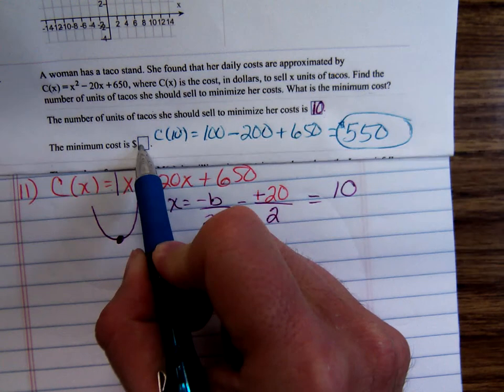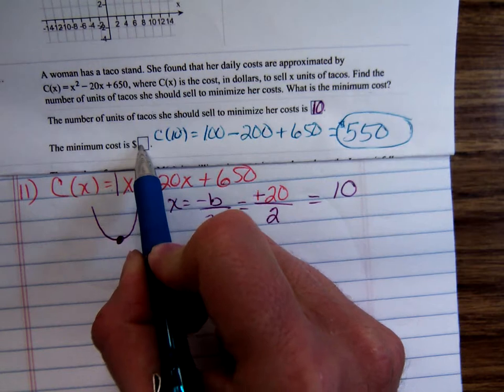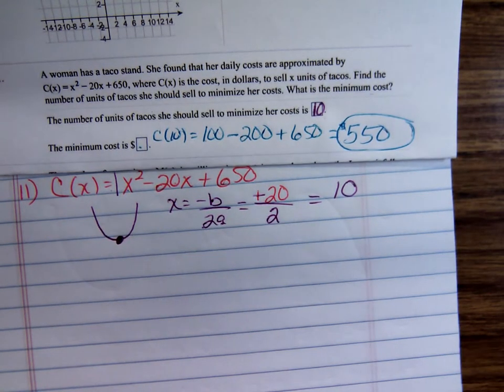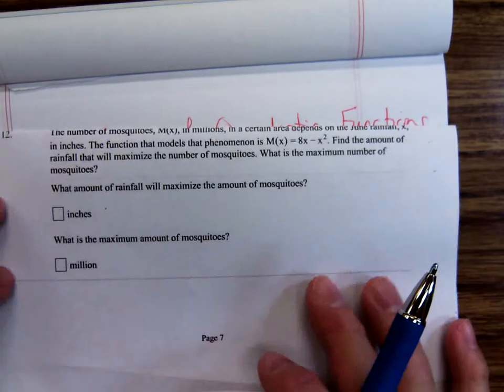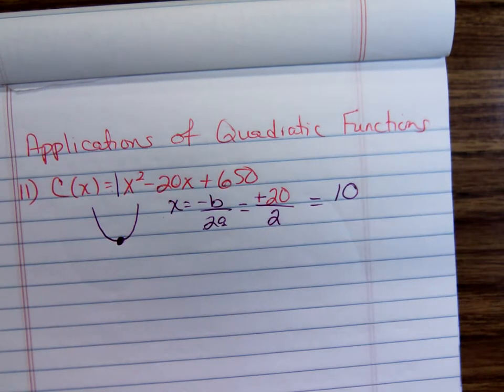For all of these word problems, basically you're going to find the vertex. It's either going to be a parabola opening up or a parabola opening down. Let's do number 12.